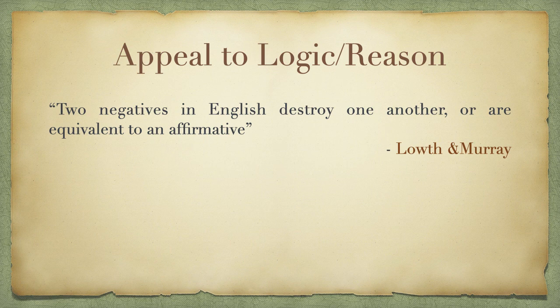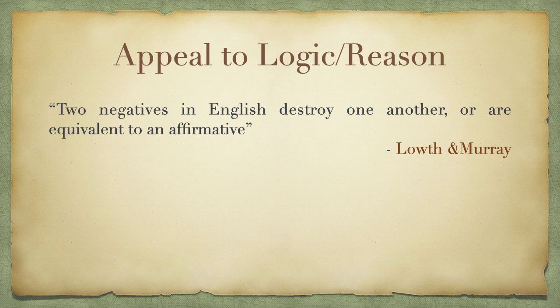Another common way of justifying a rule is by appealing to logic or reason. Probably the best known example is the famous rule about double negatives, phrased here: 'Two negatives in English destroy one another or are equivalent to an affirmative.' That phrasing was originally Lowth's, but Murray plagiarized it verbatim — which was sort of common practice at the time. The logic here is mathematical: it's specifically an appeal to the way that multiplication works. Multiplying two negative numbers results in a positive number. So the logic applied here is that if you have two negatives in a sentence, they should destroy one another and make a positive or affirmative.